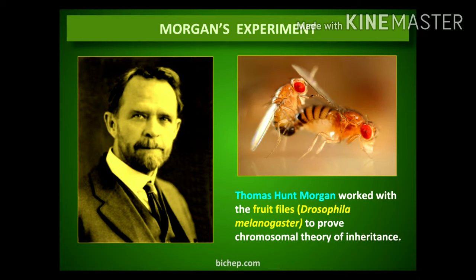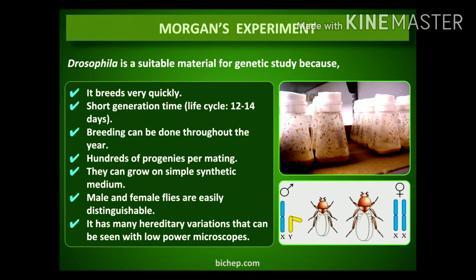Hello friends. In the last lecture we covered the chromosomal theory of inheritance given by Sutton and Boveri. In this lecture we are going to continue with Morgan's experiment. The introduction of Morgan was covered in the last lecture, so that will not be repeated. Morgan selected Drosophila melanogaster for his entire series of experiments.